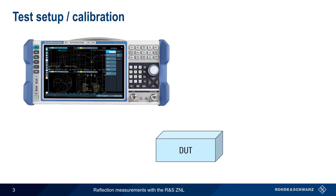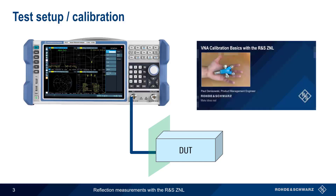Let's start with connecting the ZNL to the device under test, or DUT. In one-port or reflection measurements, we connect the DUT to one of our VNA ports, usually with some kind of cable. When making measurements, we would normally want to first calibrate our VNA using the end of the cable as our reference or calibration plane. In this presentation, we'll assume that calibration has already been performed. Please see the presentation VNA Calibration Basics with the Rohde & Schwarz ZNL if you'd like step-by-step instructions on how to perform a calibration.